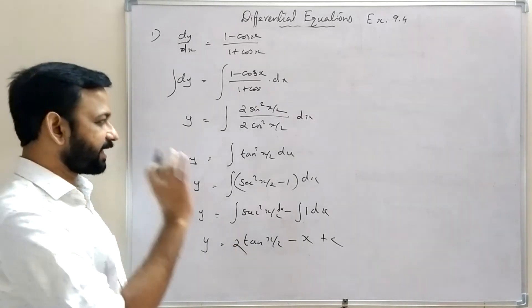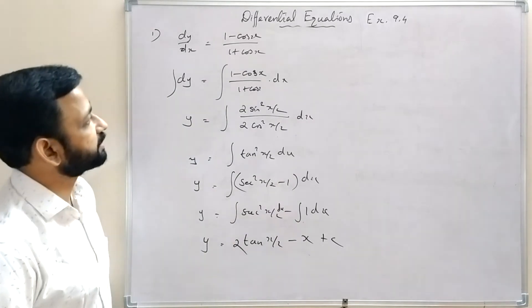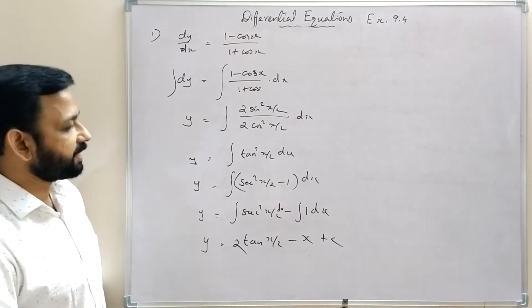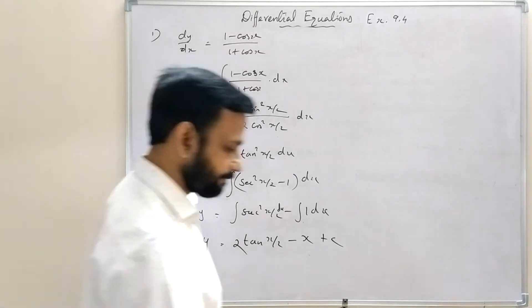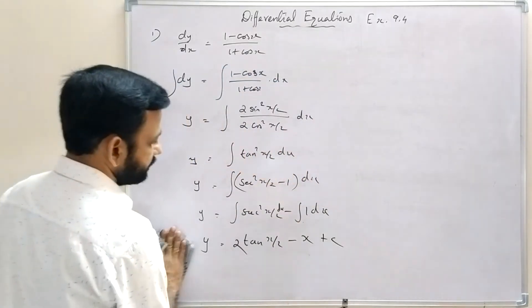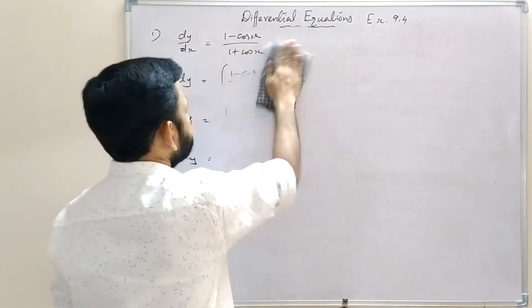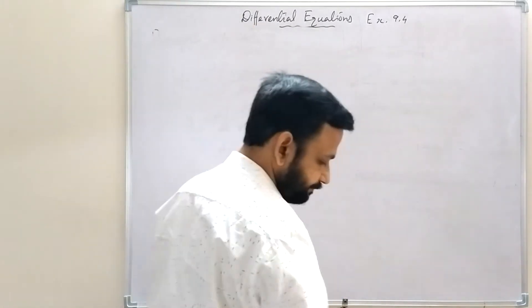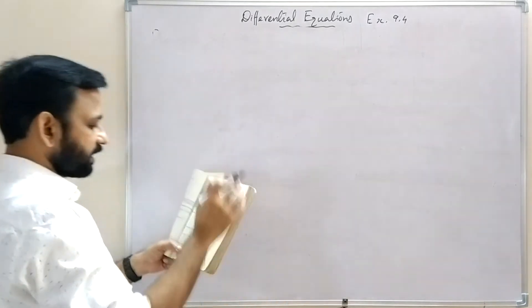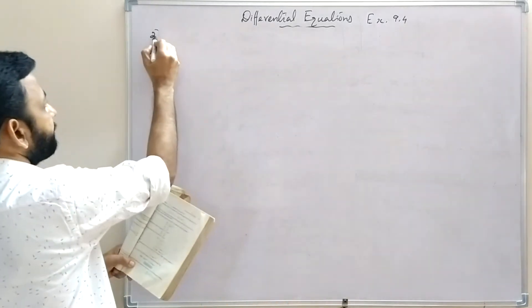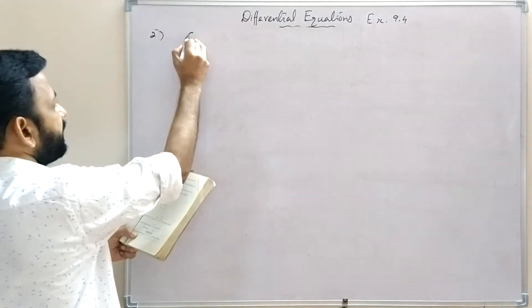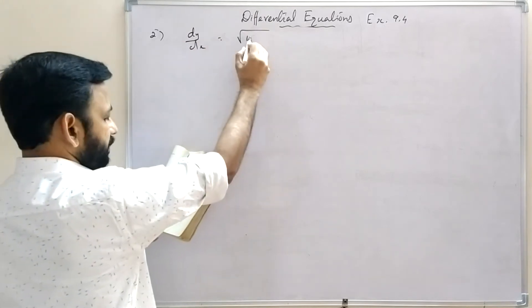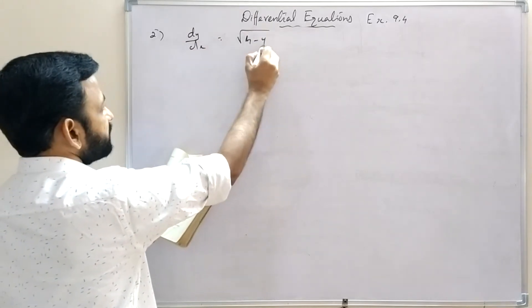Question 2: dy/dx = √(4 - y²). Separating variables: dy/√(4 - y²) = dx. This is of the form integral dx/√(a² - x²) = sin⁻¹(x/a).